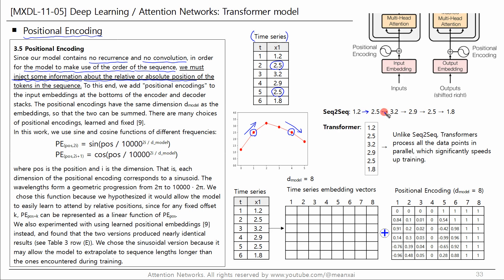In the seq-to-seq model, data is processed sequentially, one by one. The second 2.5 follows 1.2 and the fifth 2.5 follows 2.9, so the seq-to-seq model can distinguish between these two. However, in the transformer, these two will not be distinguished because data is processed simultaneously in parallel. To solve this problem, the authors of the paper added positional encodings to the input embeddings at the bottoms of the encoder and decoder stacks.